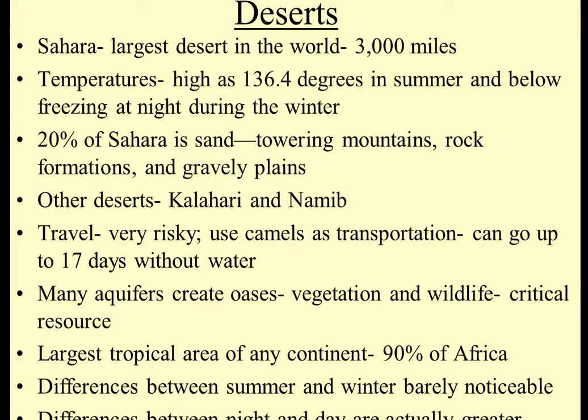The two other deserts you need to know about in Africa are the Kalahari and the Namib, both in the southern part of Africa. Travel in the deserts is very risky without water. Camels are used for transportation — they can go about 17 days exactly without water.